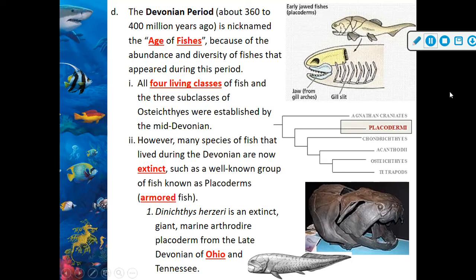The Devonian period, about 360 to 400 million years ago, is nicknamed the 'Age of Fishes' because of the abundance and diversity of fishes that appeared during this period. All four living classes of fish and three subclasses of Osteichthyes were established by the mid-Devonian. However, many species that lived during the Devonian are now extinct, such as the placoderms or armored fish — you can see a picture of one in the bottom right corner. Dunkleosteus is an extinct giant marine arthrodire placoderm from the late Devonian of Ohio and Tennessee.